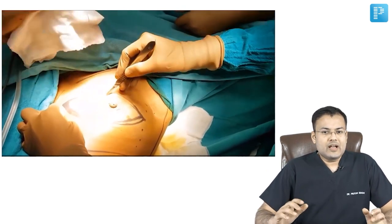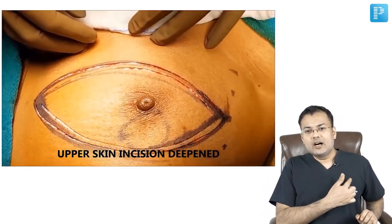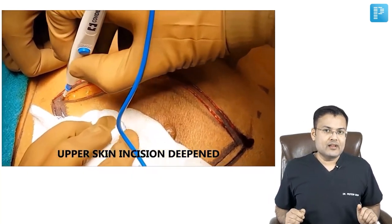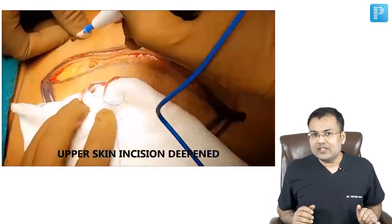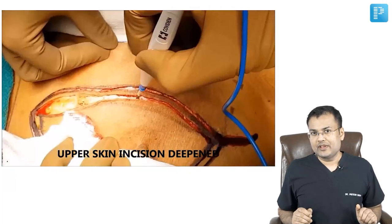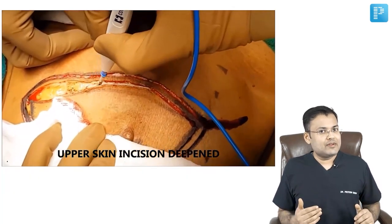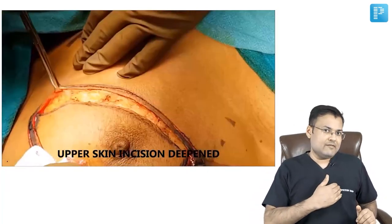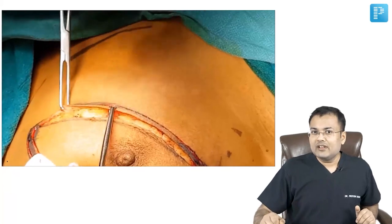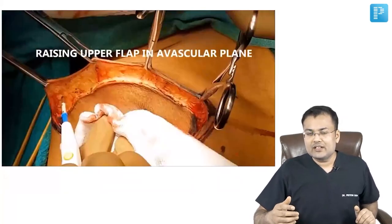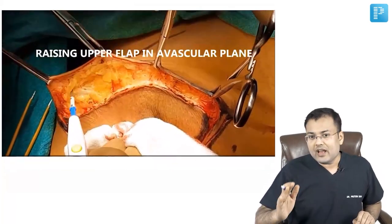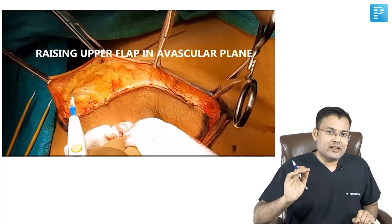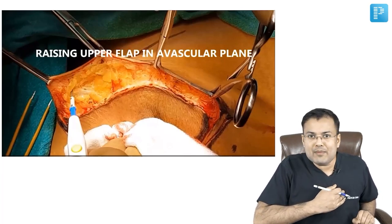After marking, we are going to deepen the upper skin incision. After that we have to perform dissection in the avascular plane and raise the skin flap. You can see multiple Ellis tissue forceps which are used to raise the skin flap. The avascular plane is between the subcutaneous fat and mammary fat.